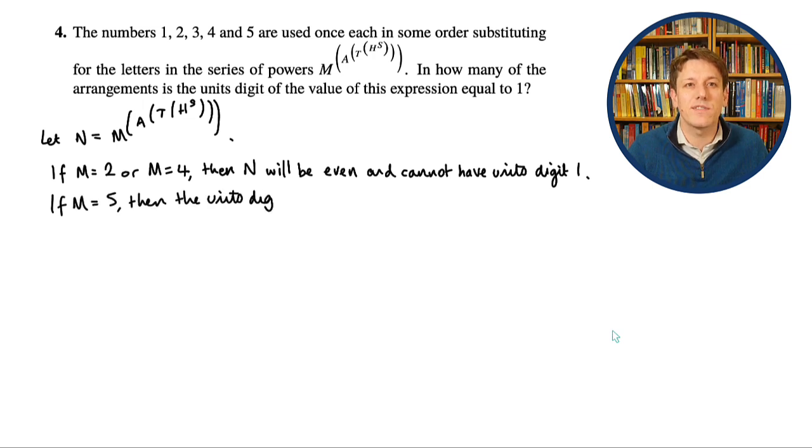Similarly, if we had m equals 5, then the units digit would be 5, because I'd have 5 to the power of something, and any power of 5 ends in 5, and not 1. So I can immediately eliminate the cases 2, 4, and 5 for m. Now, I've thought about this in advance, so I'm doing these cases from easiest to hardest, so the next case would be m equals 1.